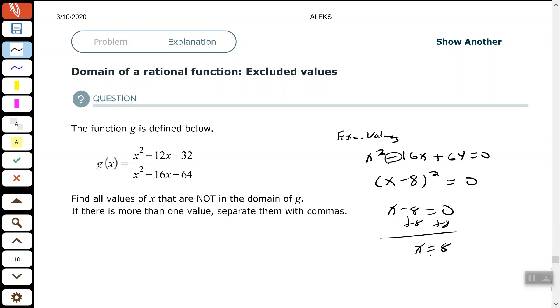Which means if I replace X with 8 in this equation and solve, then I will get zero in my denominator and that would make it undefined. So 8 is my excluded value. So that would not be in the domain of G is what it's saying.